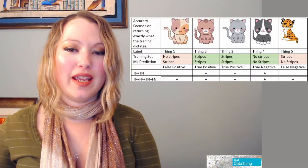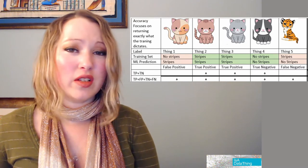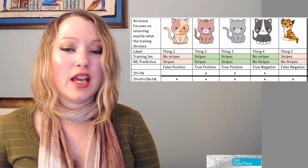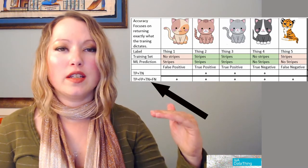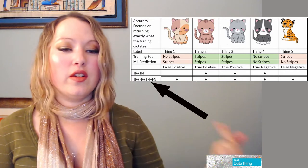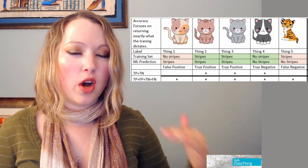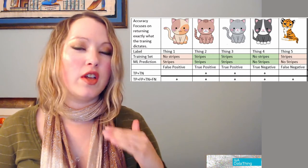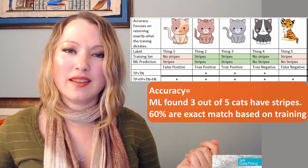There are a few ways to measure how confident you can be in your model. The very first measure is accuracy — how accurate were we? This is the easiest one to do; it's basically just counting how often the machine got it right. You're going to do true positives plus true negatives, divided by the sum of everything: all true positives, all true negatives, all false positives, and all false negatives.